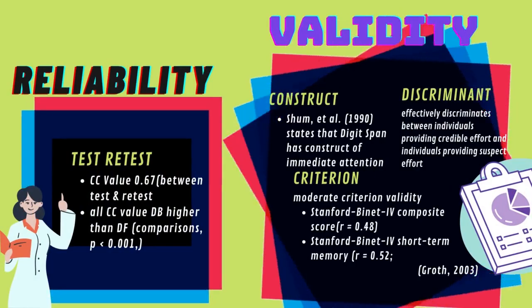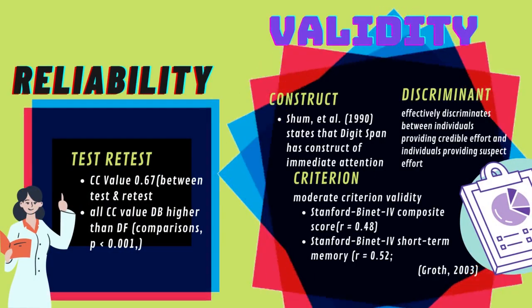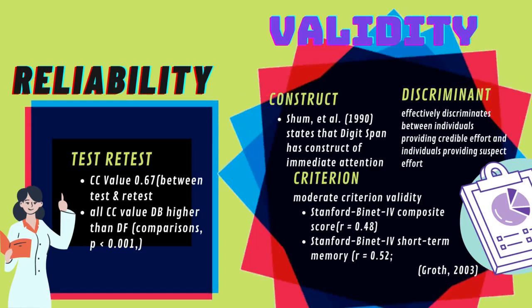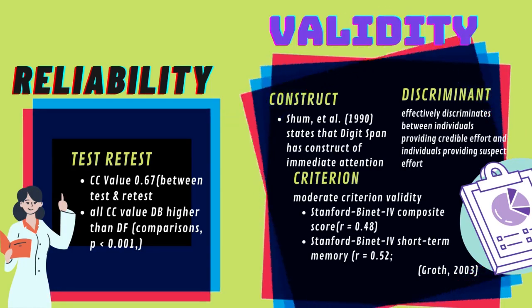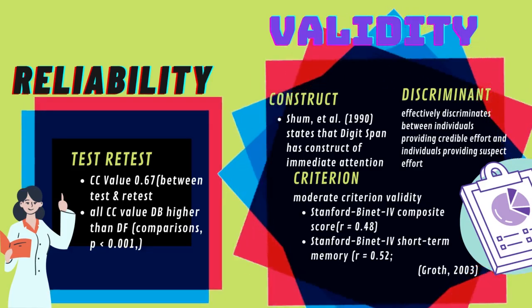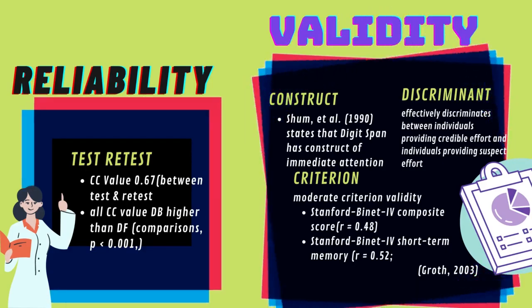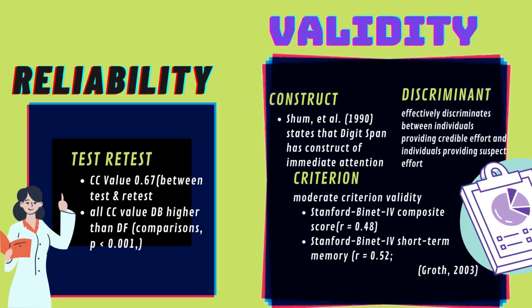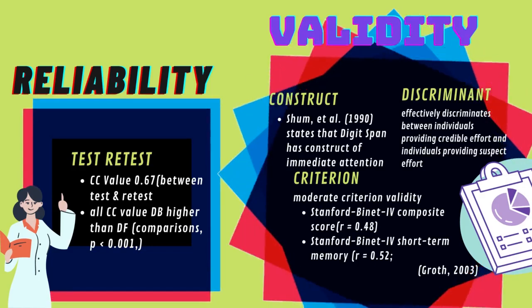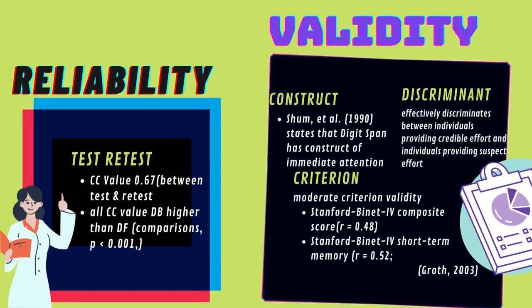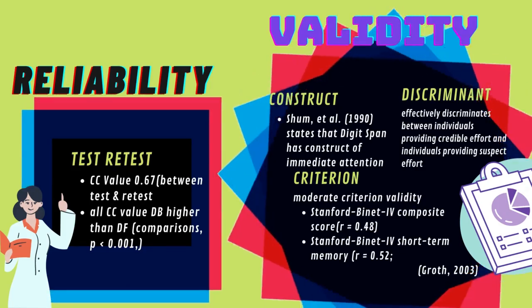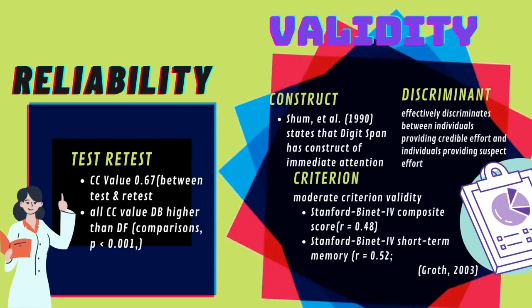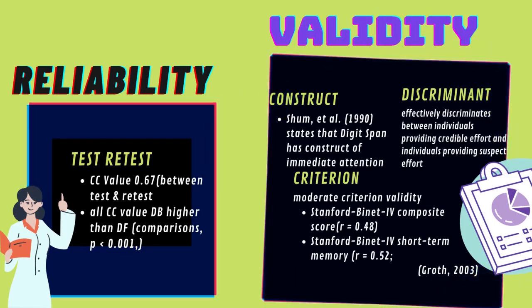For psychometric properties: Reliability — test-retest correlation coefficient was found to be 0.67 (Dernal et al.). Correlation was significantly higher for Digit Backward than Digit Forward across 12 of 12 comparisons (p < 0.01 sign test), suggesting more consistent ranking in Digit Backward (Woods et al.). For construct validity, Shum et al. (1990) found Digit Span loaded on immediate attention span. For criterion validity, Digit Span showed moderate validity with Stanford-Binet 4 composite score (r = 0.48) and short-term memory score (r = 0.52) (Wechsler, 1997). For discriminant validity, Digit Span effectively discriminates between credible and suspect effort with an average effect size of 1.34, indicating the measure remains valid despite updated WAIS test versions.